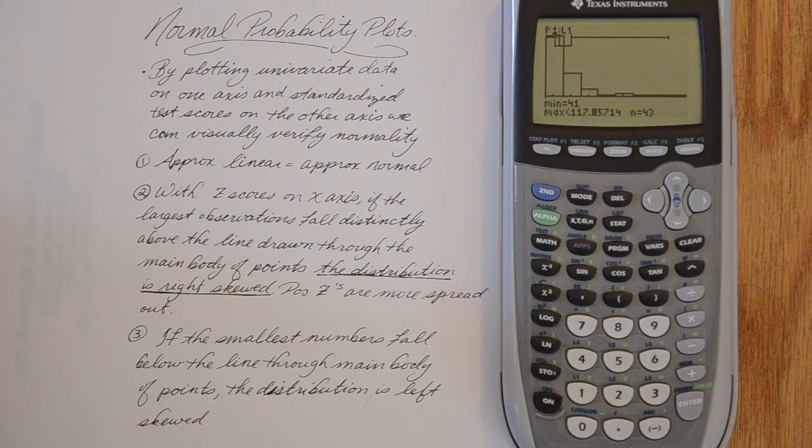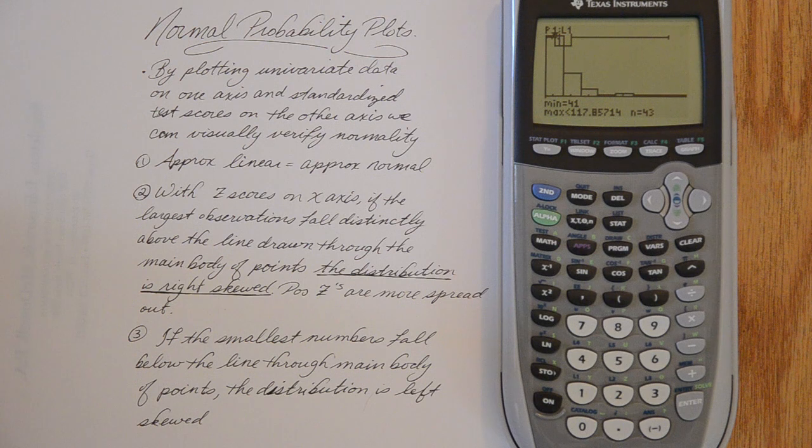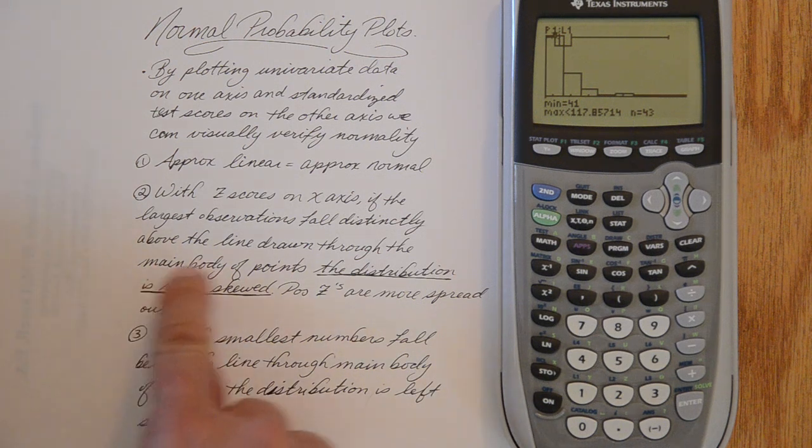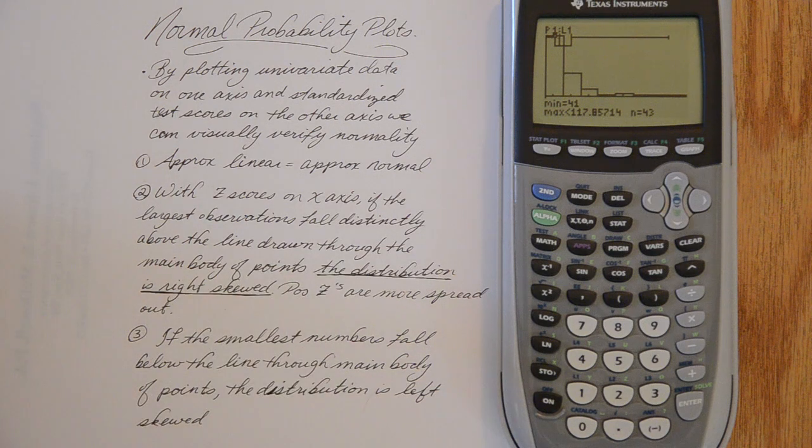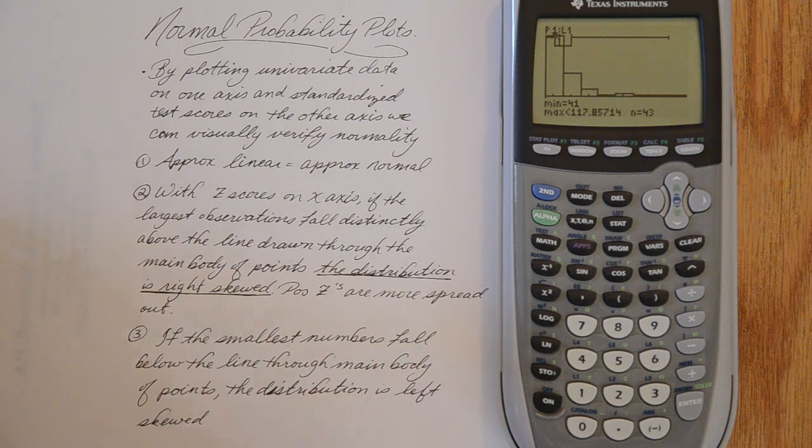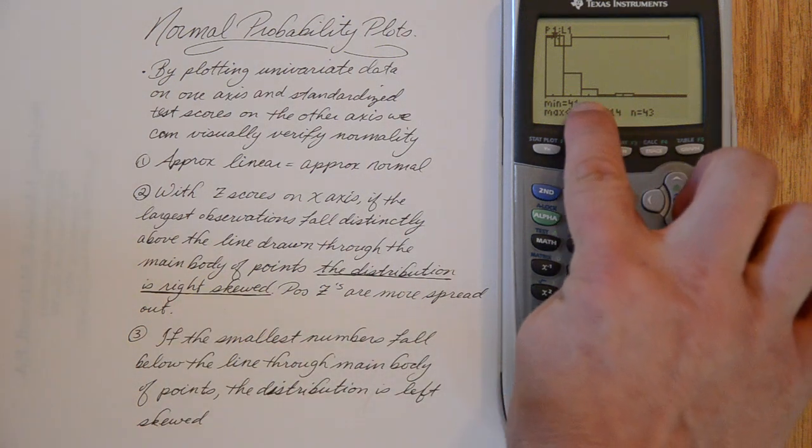If we have z-scores on the x-axis, I am going to match the way my textbook does it with my z-scores on the x-axis, if the largest observations fall distinctly above the line drawn through the main body points, this will be something that you visualize. It is not going to be on my graph here in a minute. Then the distribution is going to be right skewed. That means your positive z-scores are more spread out. And that is what a right skewed distribution does.